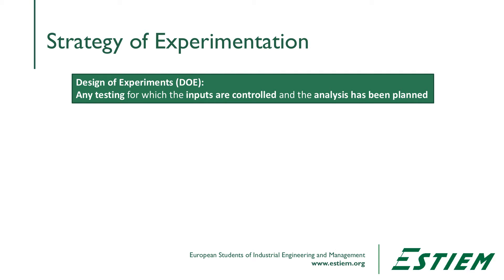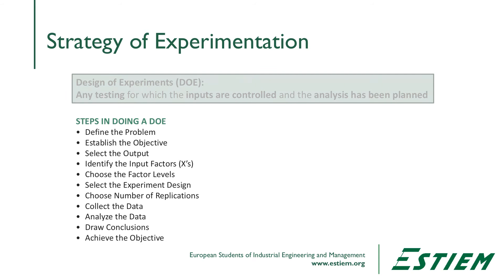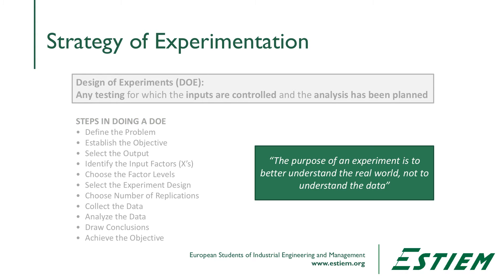What is a designed experiment? The challenge is actually design — how do we choose the factors and their levels? Key questions include: what type of experiment do we have, how do we organize the data, how do we control noise, what do we do about noise we can't control, and how do we optimize process factor settings? The formal definition is any test for which the inputs are controlled and we plan the analysis. We define the problem, establish objectives, select the output, and identify input factors — all done in the Define, Measure, and Analyze phases. The purpose is to better understand the real world, not just about the data.